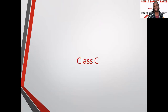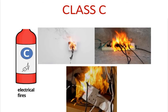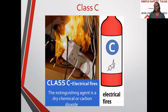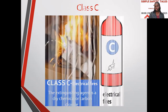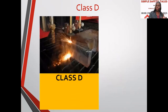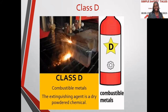Most of the time it is a general rule to have a dry chemical powder extinguisher, which covers Class A, B, and C — almost all types of fire. For Class C, which are electrical fires — electrical panels, wiring, motors — the extinguishing agent is dry chemical powder or carbon dioxide. Always note that we do not use water to fight electrical fires, because water is a good conductor of electricity.